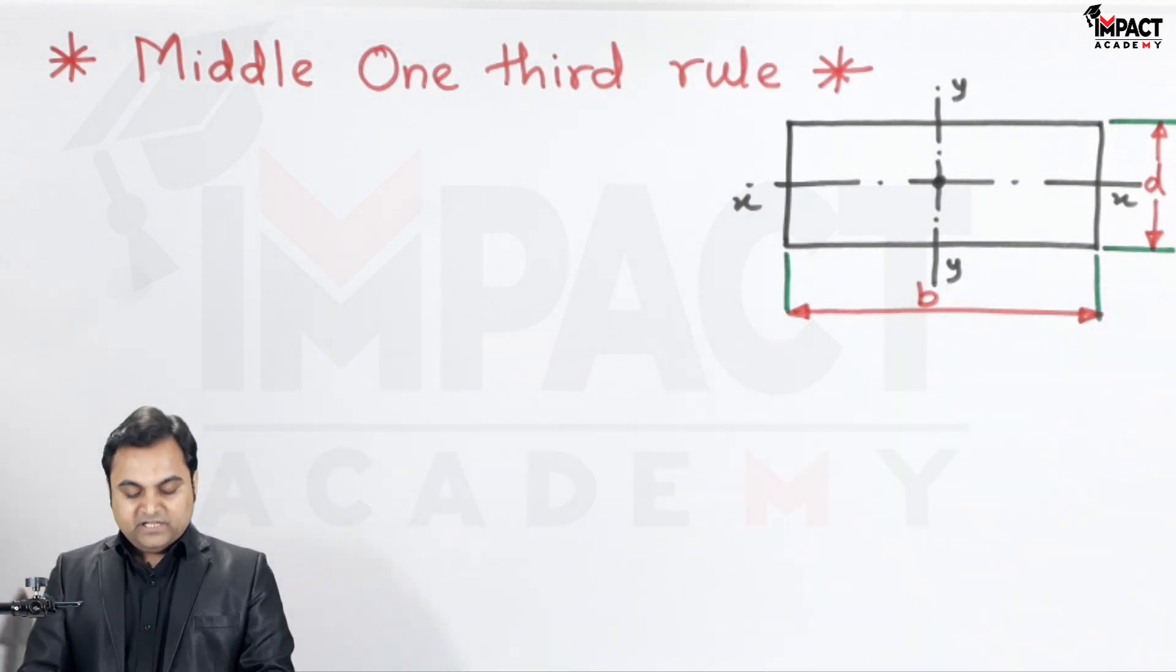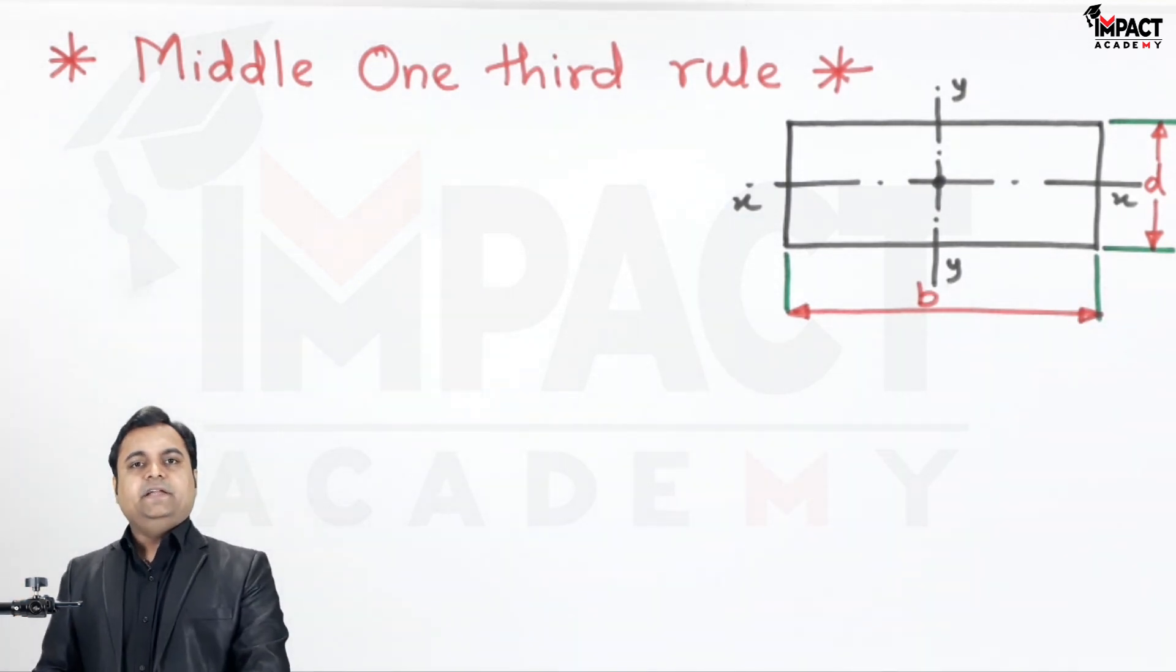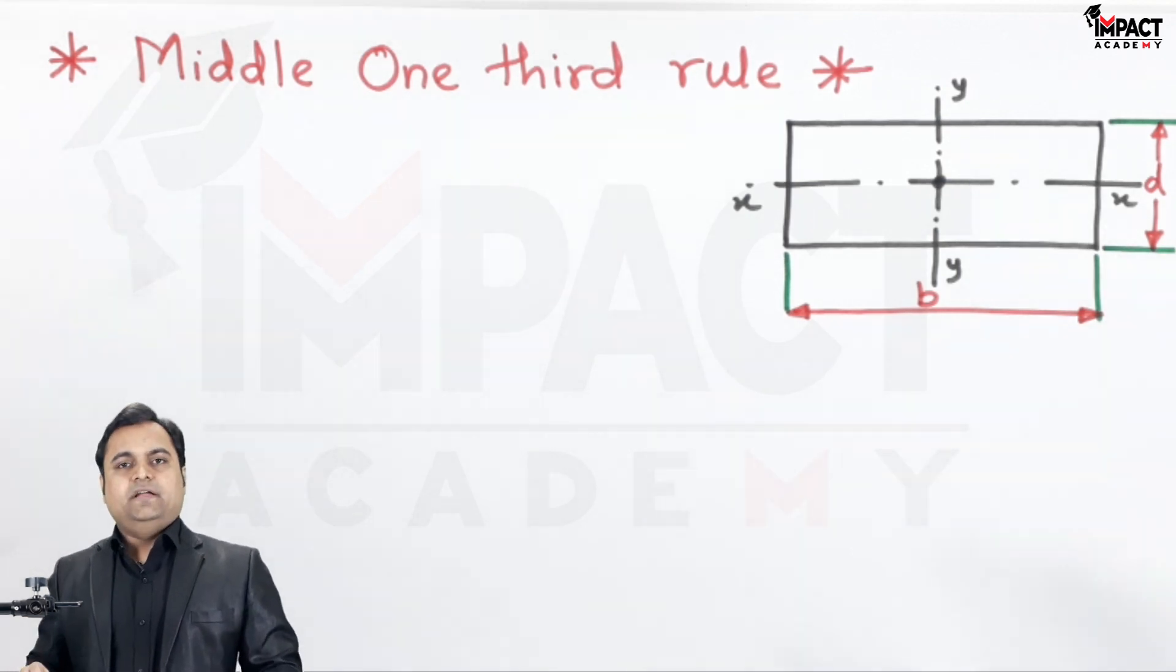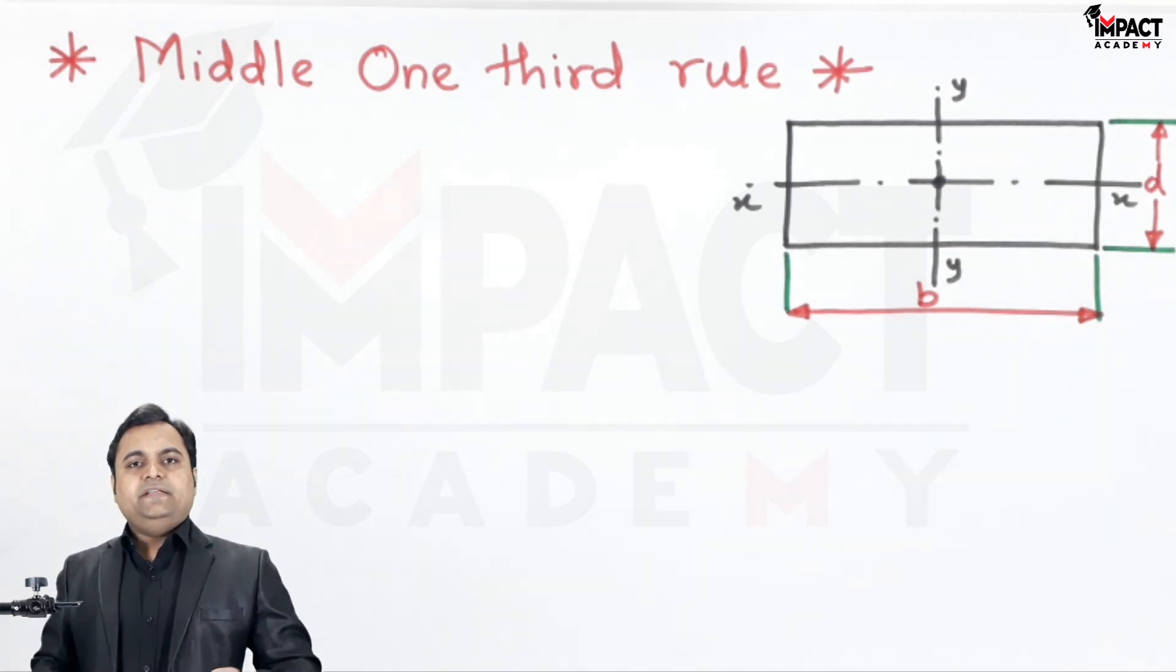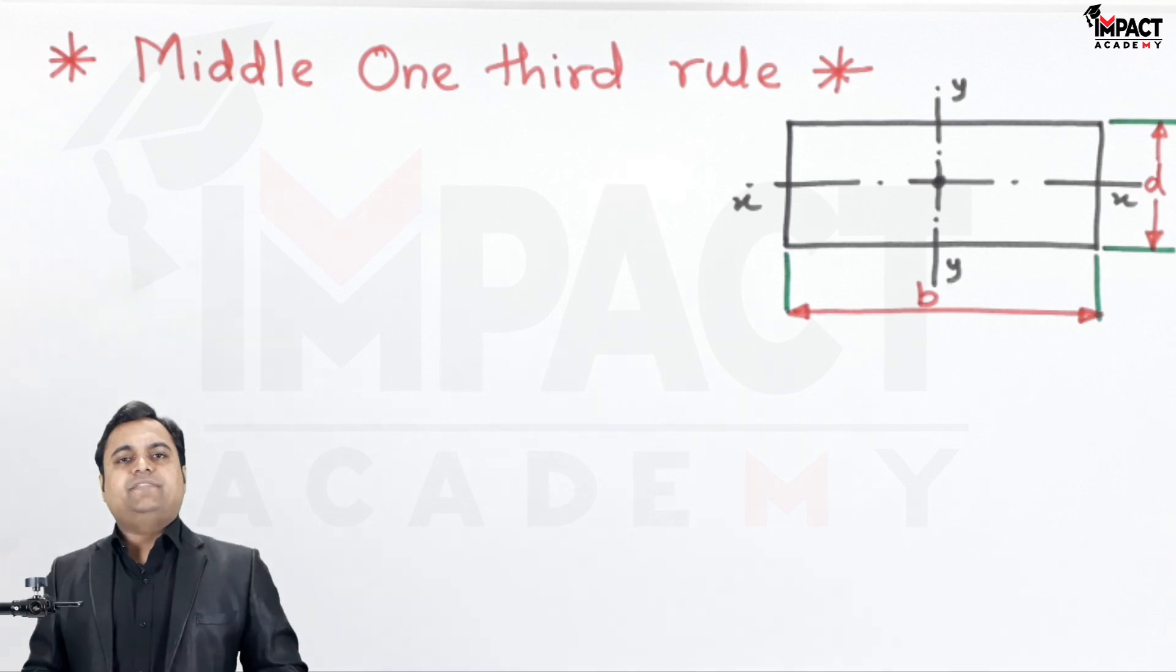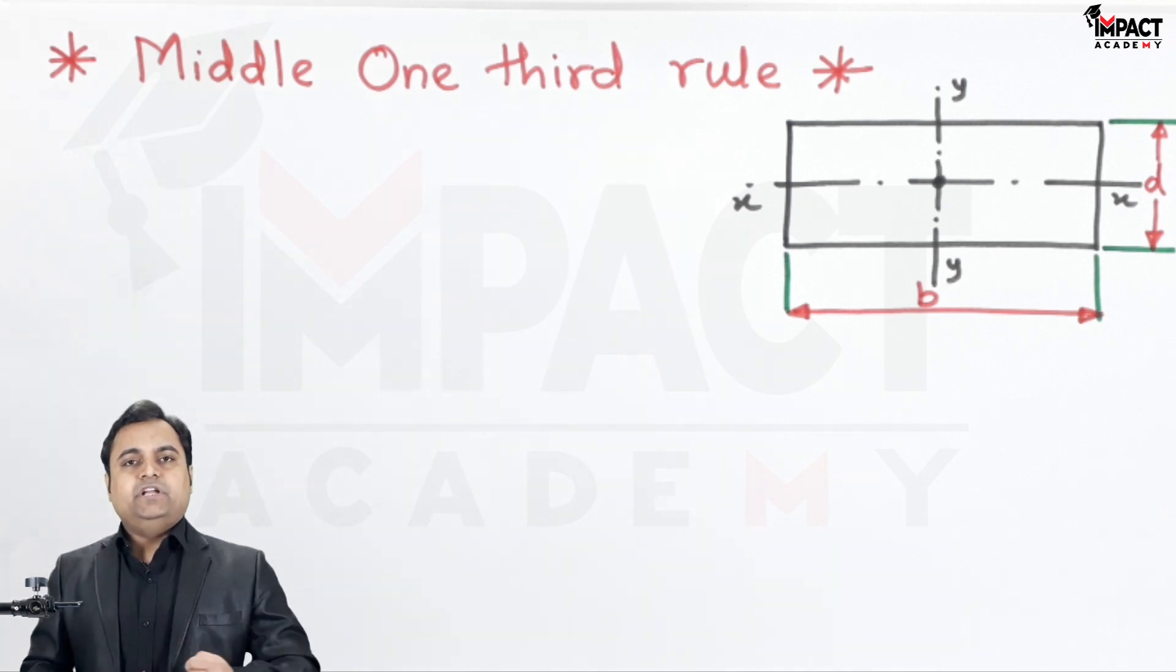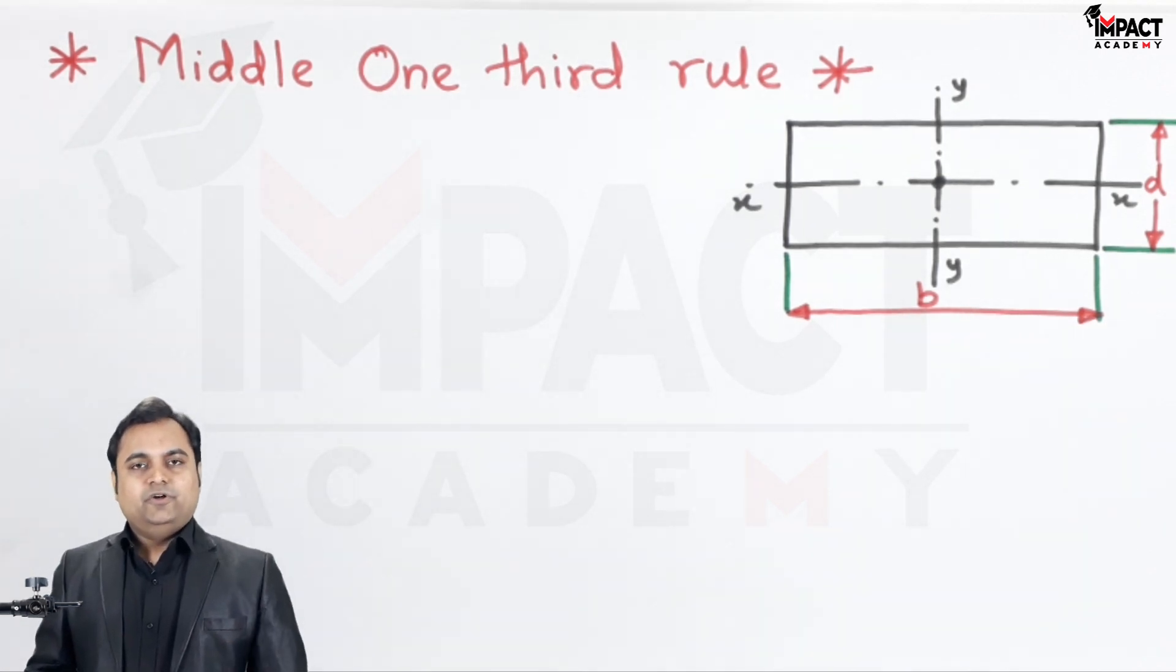Now the middle one-third rule indicates an area at the center of this rectangle. That area is the location for the eccentricity - if we place the load anywhere in that area, we get no tension in the section for this column.